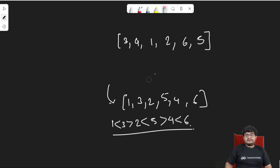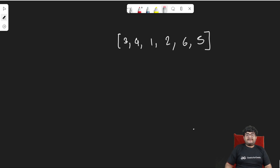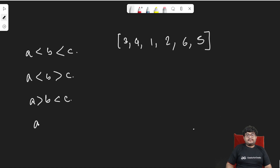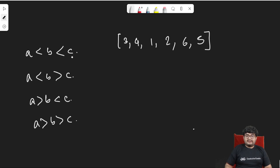We will not do sorting. For any three elements a, b, c, there are exactly four possible orderings: a < b < c, a < b > c, a > b < c, or a > b > c. These are all the cases in which three elements can appear in the array — no other combination is possible.